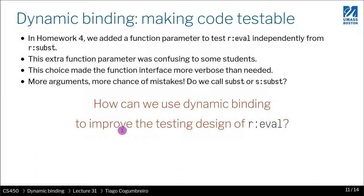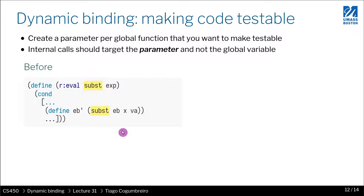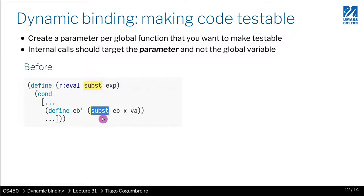What we did in homework 4 was that we had a parameter called subst, which was the substitution function. Inside, you would call subst whenever you want to do substitution, rather than calling r-colon-subst.subst. This is how we kind of broke the dependency between reval and sr-subst.subst.